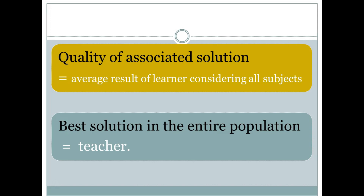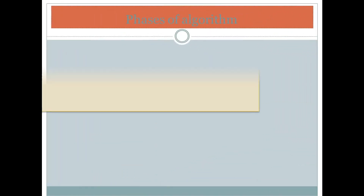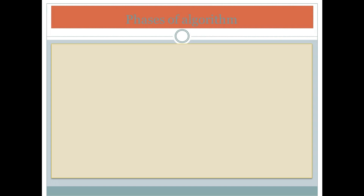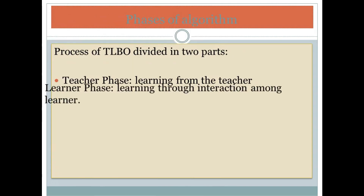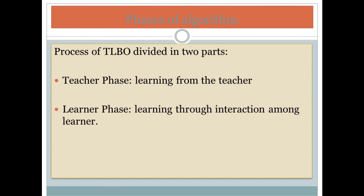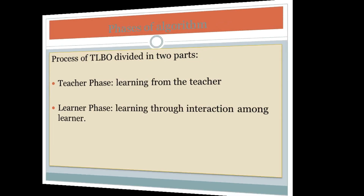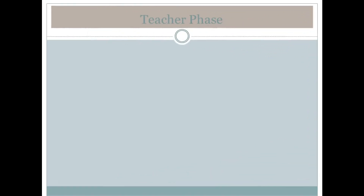The teacher delivers knowledge to improve the knowledge of others. During the process of finding the solution, the teacher component has the highest fitness value and keeps training others to improve their value. This algorithm works in two phases: the teacher phase, where learning is done only from the teacher, and the learner phase, where learning can be done in two modes — each learner can learn from the teacher as well as from other learners, who mutually interact and update their knowledge.